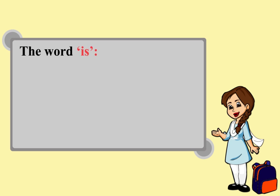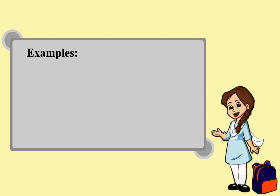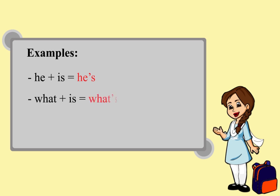The word 'is' — we just drop the I and use the apostrophe in place of the I. Examples: He plus is equals he's. What plus is equals what's. It plus is equals it's.